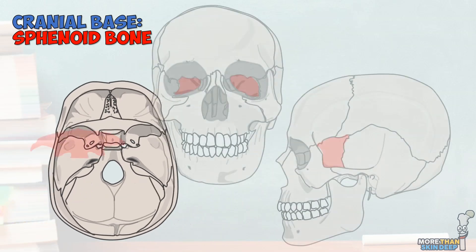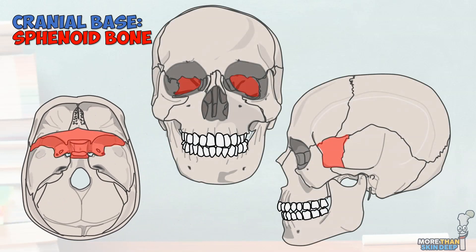These are the parts of the sphenoid bone that you can see from the outside. Important to note is that there's a weak point in the skull where the sphenoid, frontal, parietal, and temporal bones meet, known as the pterion.